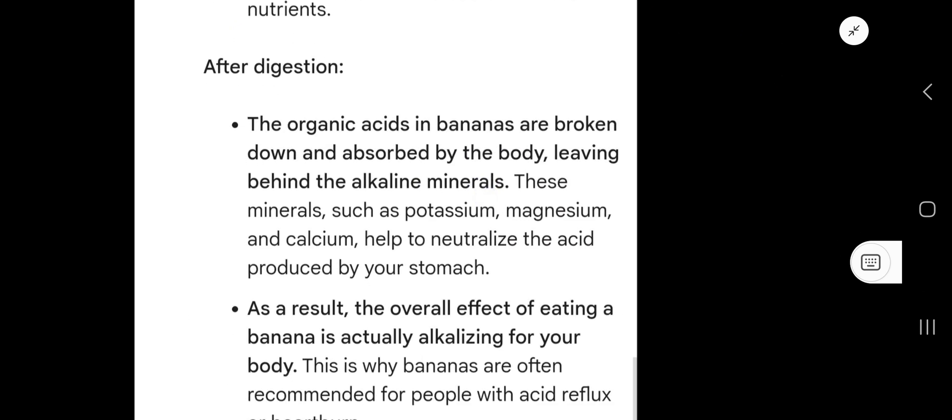So after digestion, what will happen? The organic acids in bananas are broken down and absorbed by the body, leaving behind the alkaline minerals like potassium and magnesium. These minerals help to neutralize the acid produced by the stomach. When we take food, our stomach produces acid like hydrochloric acid.